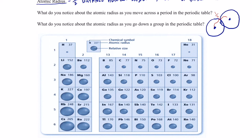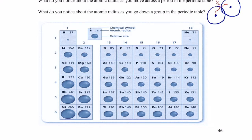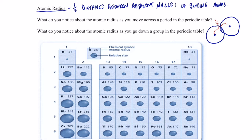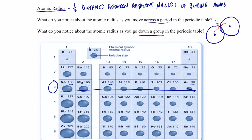On our periodic table, this distance is going to be measured in picometers. Let's look at a couple of trends as we go across a period. Let's pick period three, going from sodium to argon. Sodium's atomic radius is 186 picometers, magnesium 160, aluminum 143, silicon 118, and so on down to argon at 98 picometers. When we move from left to right across the period, the atomic radius gets smaller.